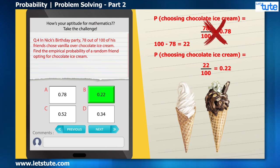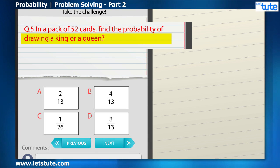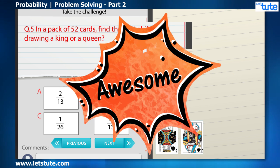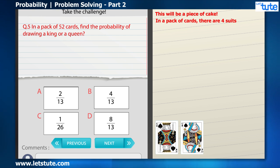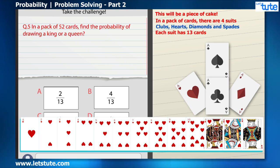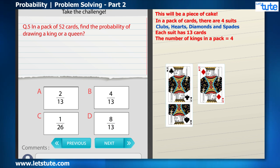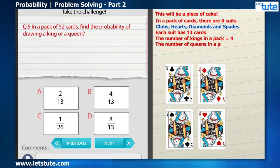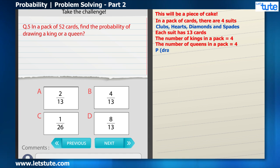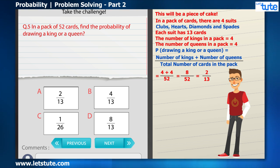Alex submitted his answer and was just waiting for the question on card to be there. The next question was: In a pack of 52 cards, find the probability of drawing a king or a queen. Awesome, he thought this will be a piece of cake. In a pack of cards, there are four suits: clubs, hearts, diamonds, and spades. So the number of kings in a pack will be four, and the number of queens in a pack will also be four. So the probability of drawing a king or a queen will be 4 plus 4 by 52, which will eventually be 2 by 13.